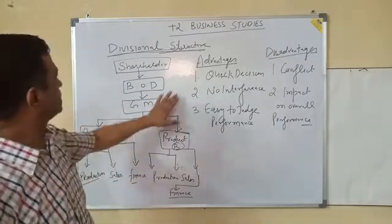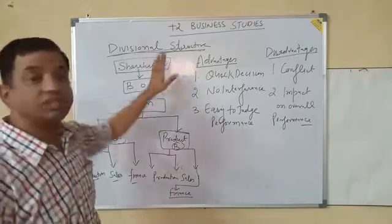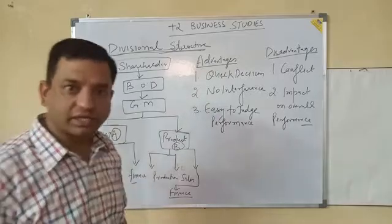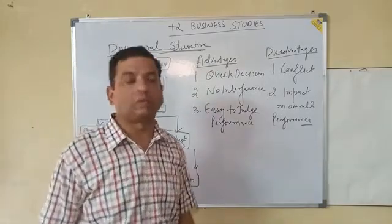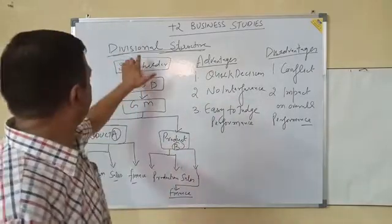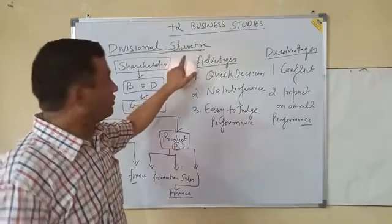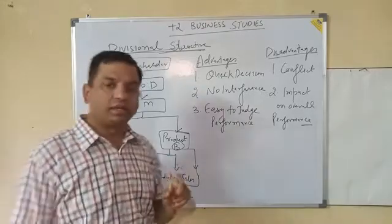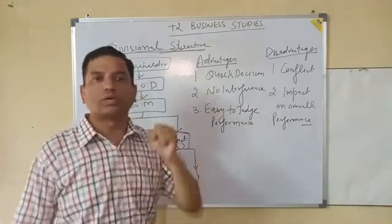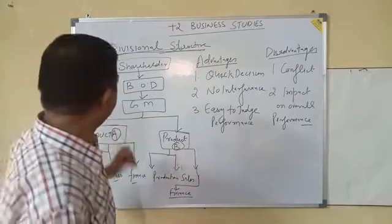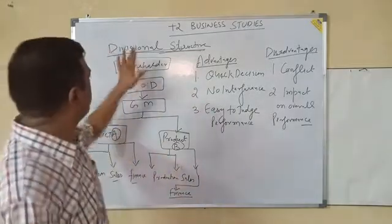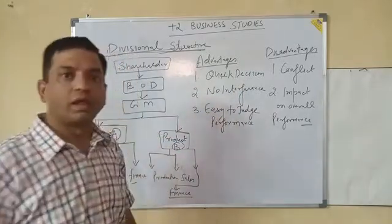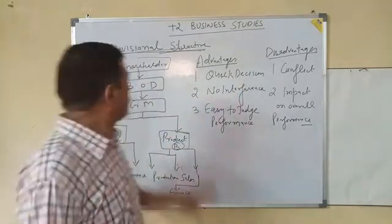Now we will discuss the second type: divisional structure. Divisional structure is that structure when a company divides its activity on the basis of product. This type of structure is useful for companies that are dealing in more than one product. When the company is manufacturing more than one product, divisional structure will be really fruitful for the achievement of organizational goals.